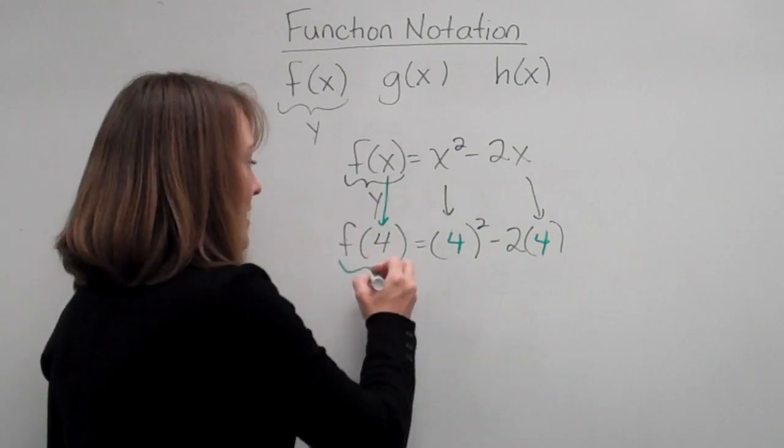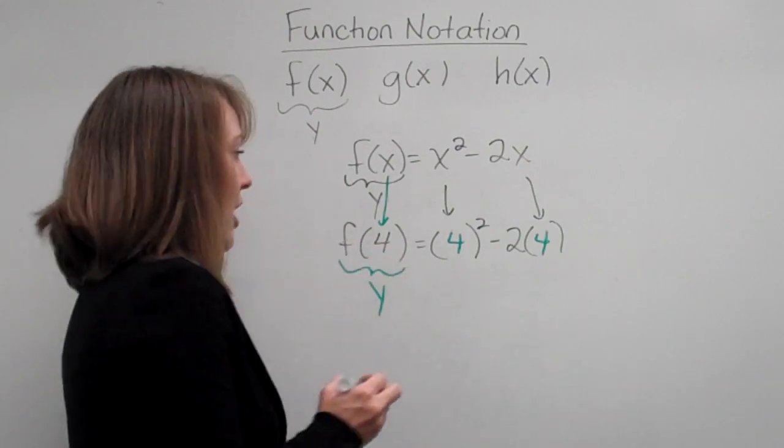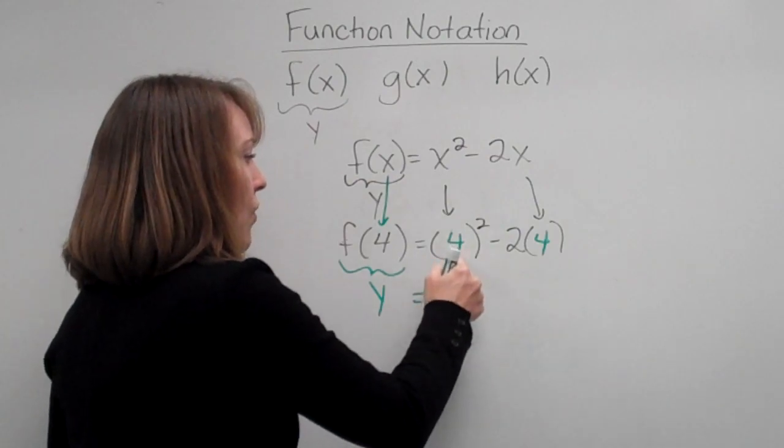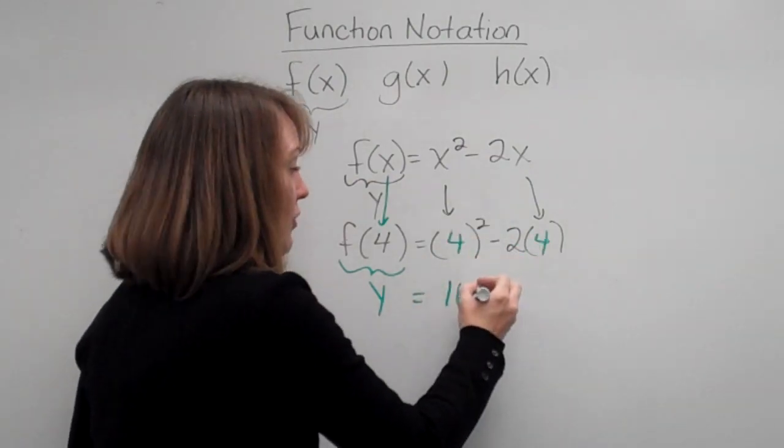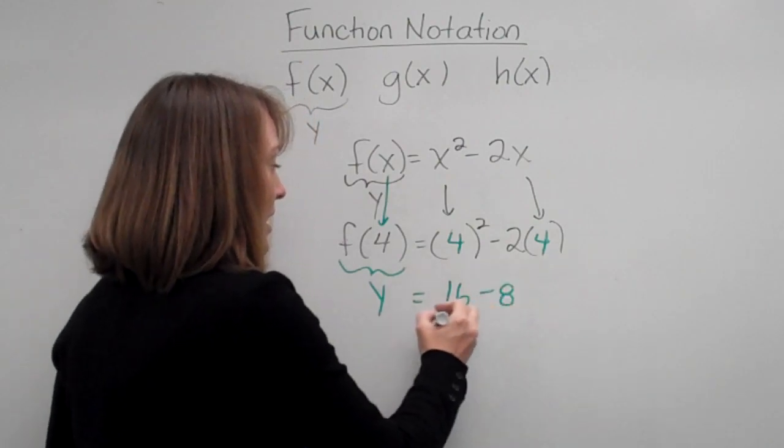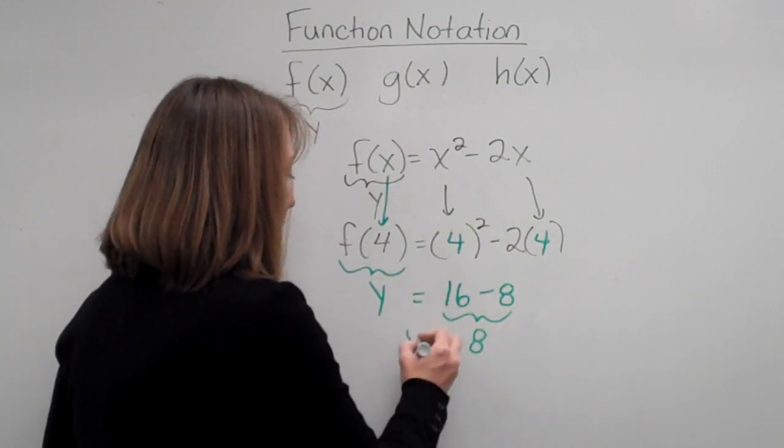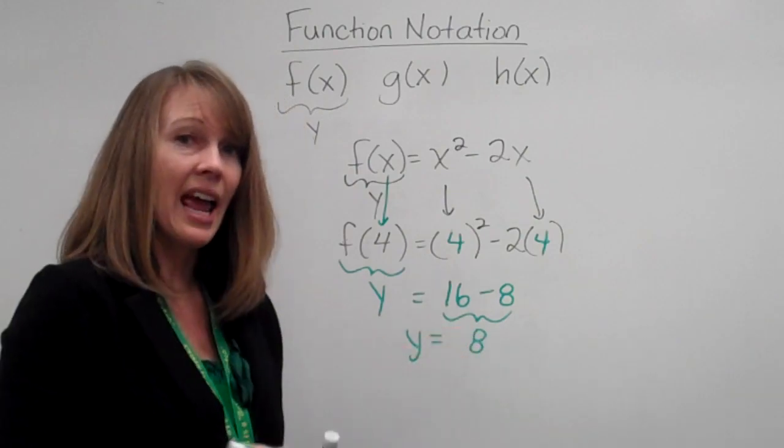But remember, this is still y. So now we're going to solve this. 4 squared is 16, and negative 2 times 4 is negative 8. 16 minus 8 is 8. So y is equal to 8.